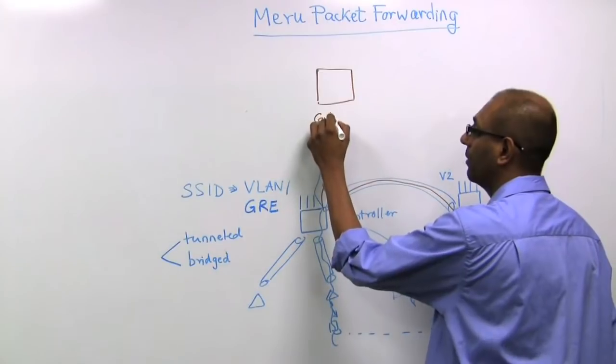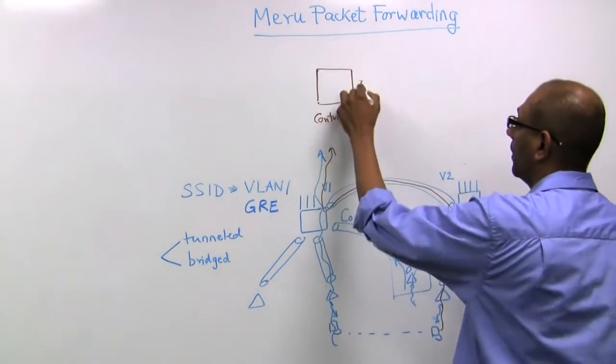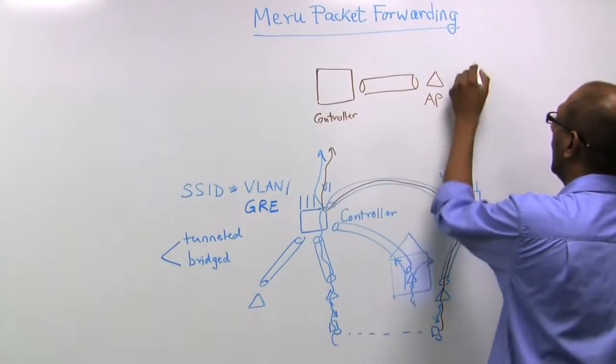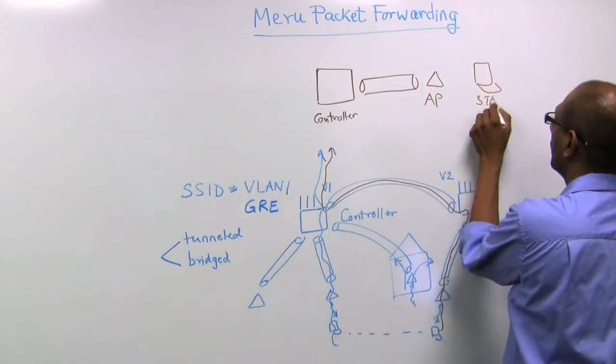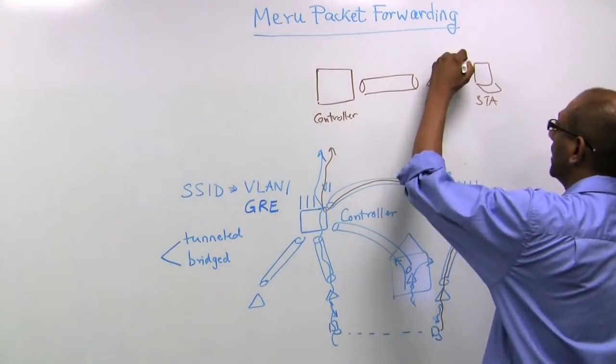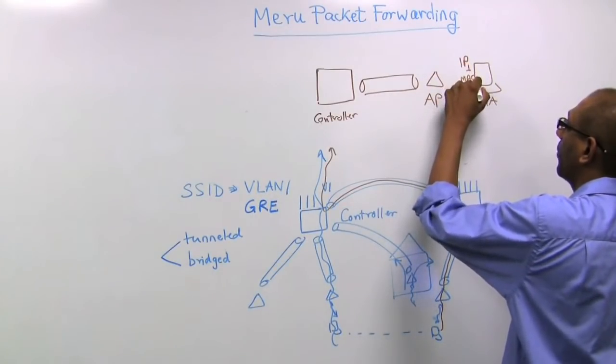So you have a controller, tunnel to an AP, and you have a wireless station. So notice that, let's give the station an IP address, IP1, and let's give it a MAC1.